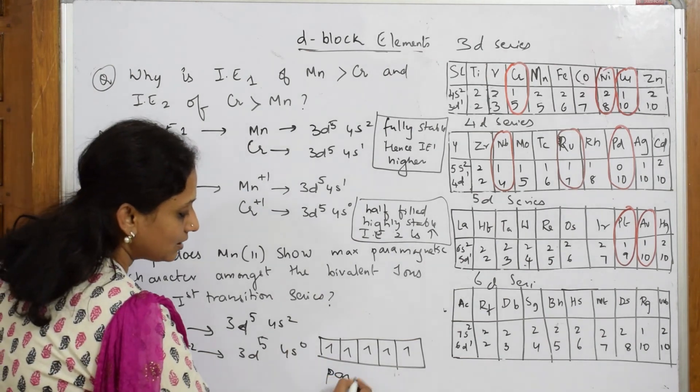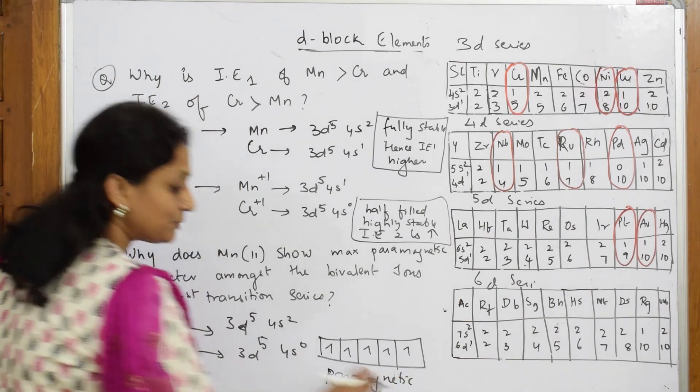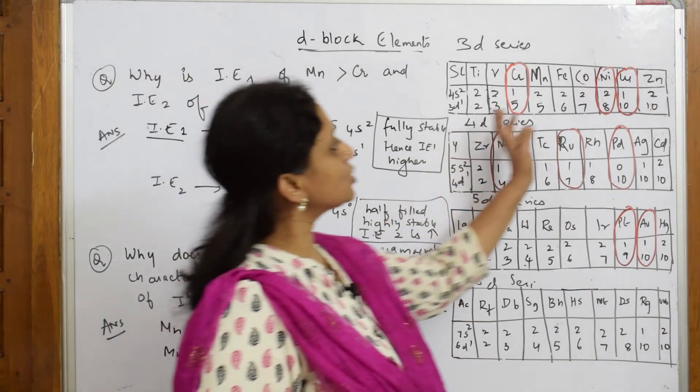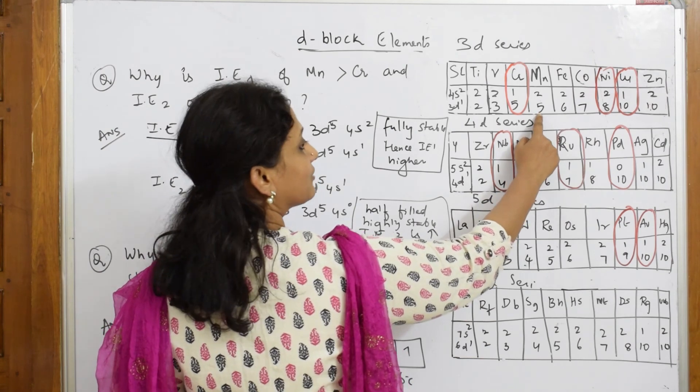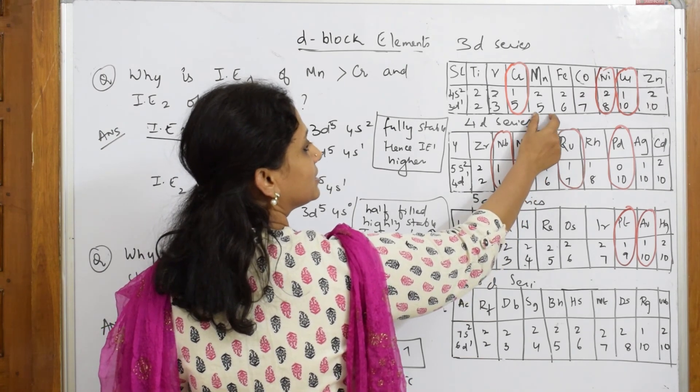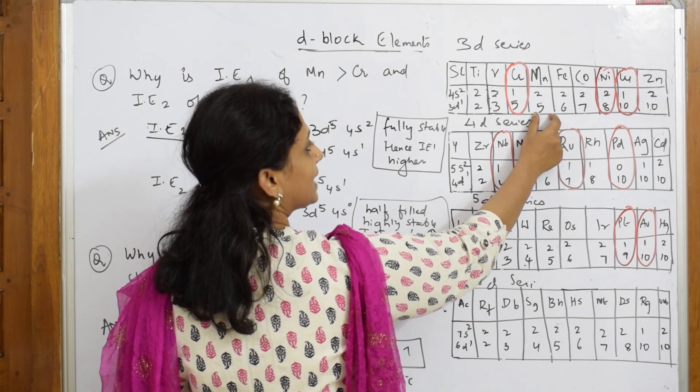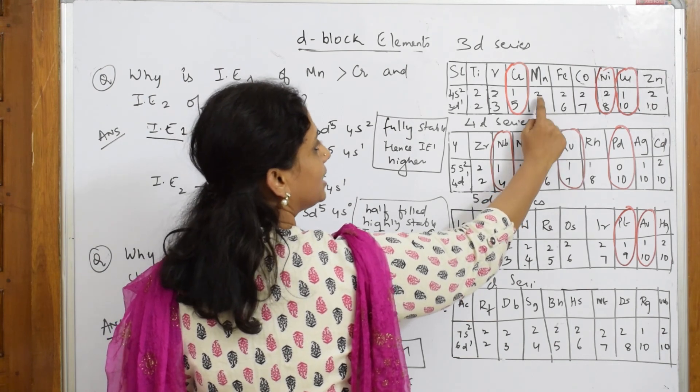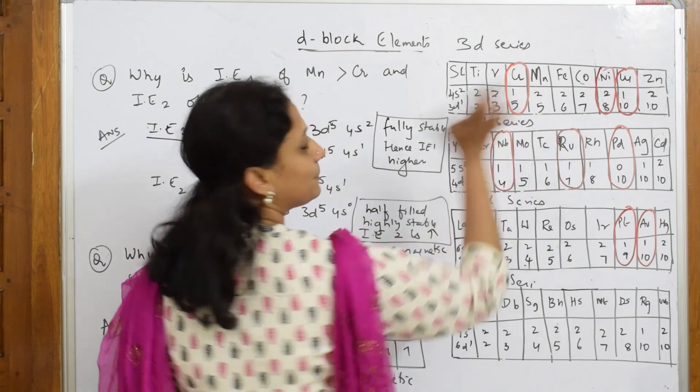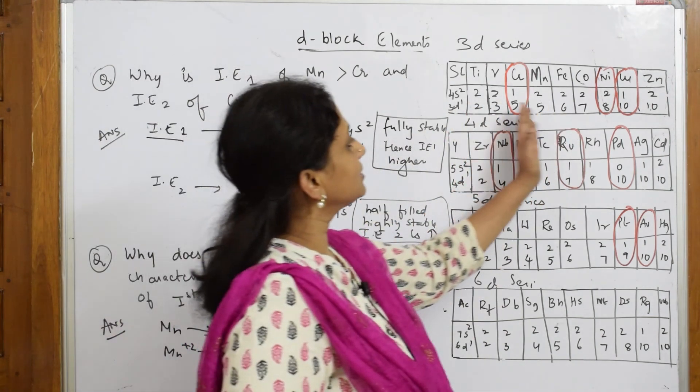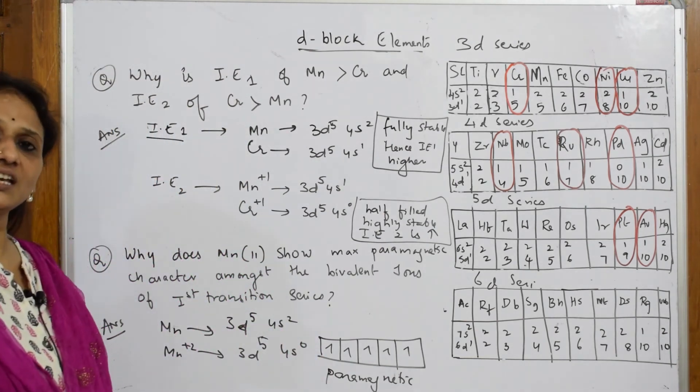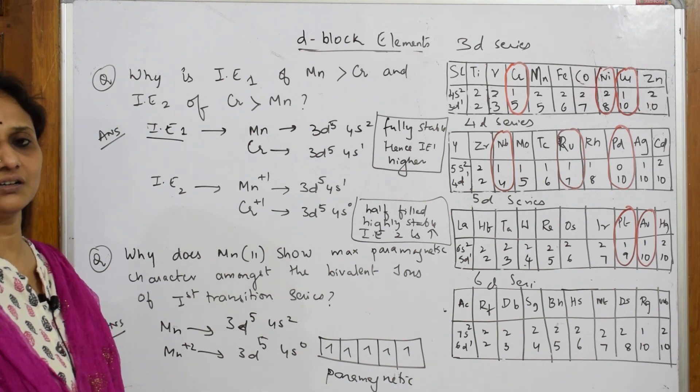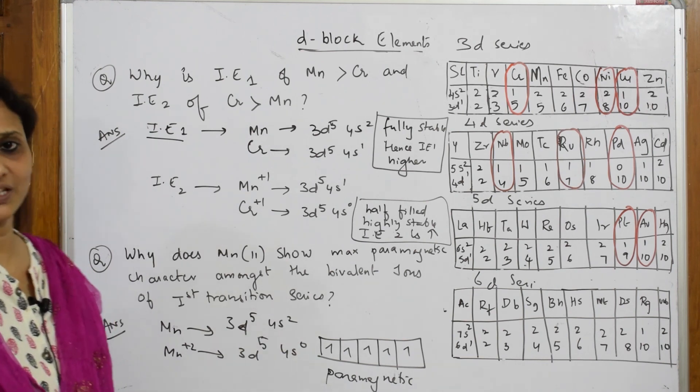When you see this whole series, Mn only has - after losing the electrons - it is the only bivalent atom which is paramagnetic. See the others: this is paired, paired, everywhere it is paired. But if I see manganese, only it is paramagnetic because of half-filled or d5 configuration.